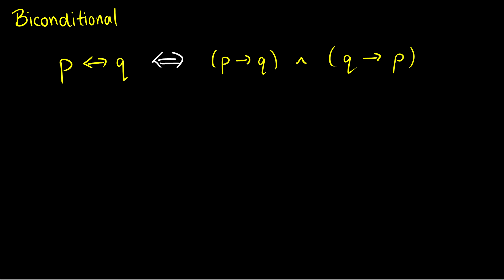We talked about the conditional and introduced the biconditional in a truth table. Let's formally define it. The biconditional is not a standard operator; it is usually defined in terms of the conditional and the conjunction operator. So P if and only if Q is the same thing as P arrow Q and Q arrow P.